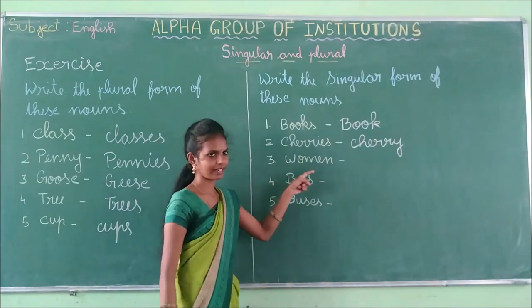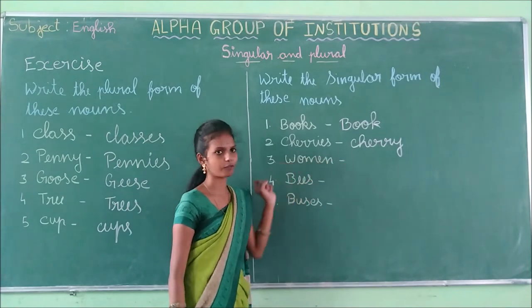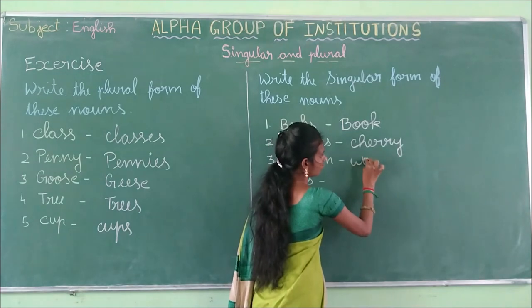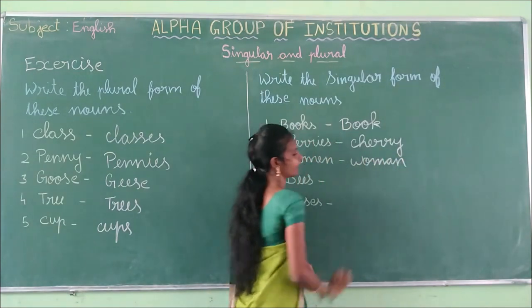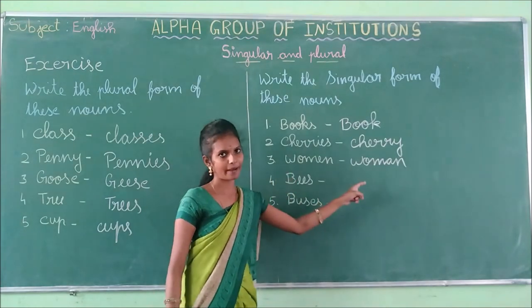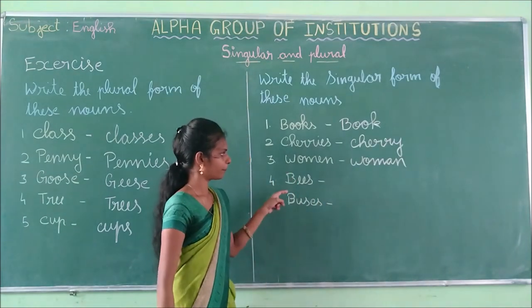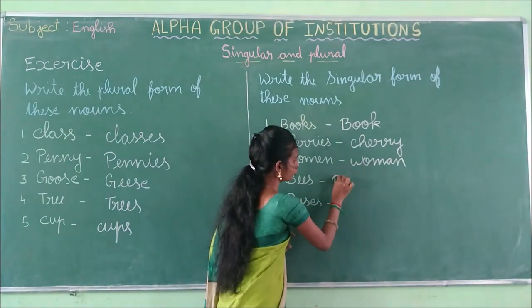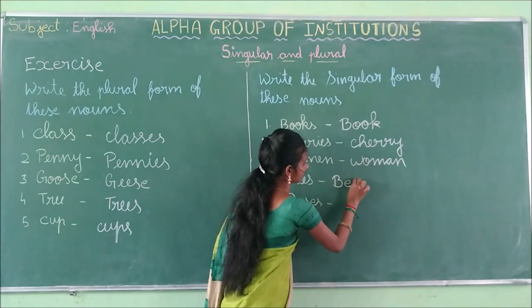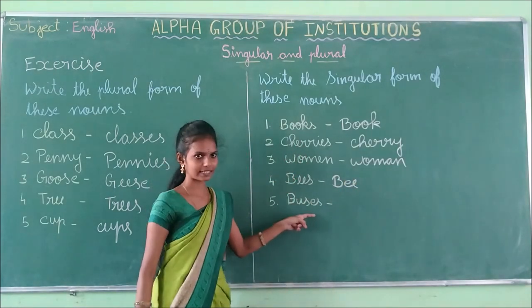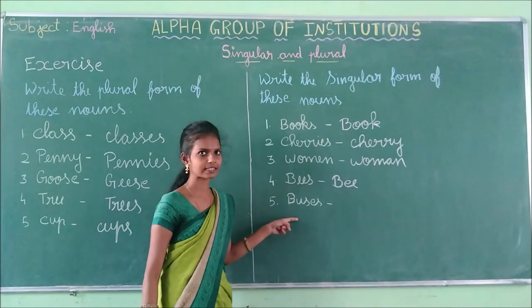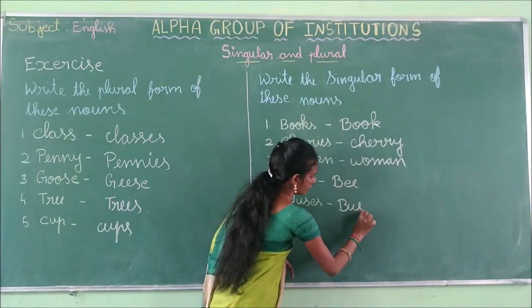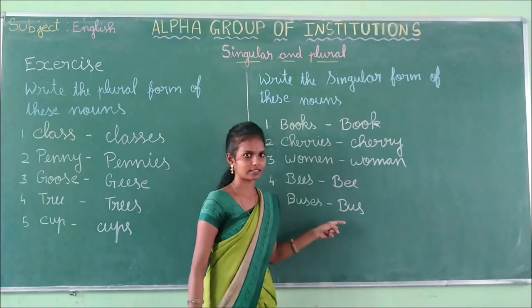Women — the singular form is woman, W-O-M-A-N. Bees — singular is bee, we remove S. Buses — singular is bus, B-U-S; we remove ES.